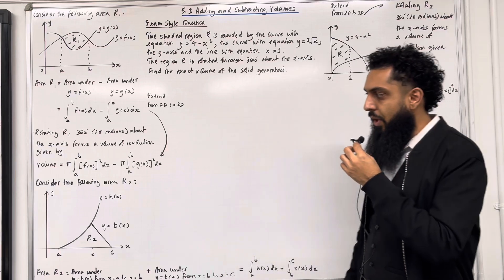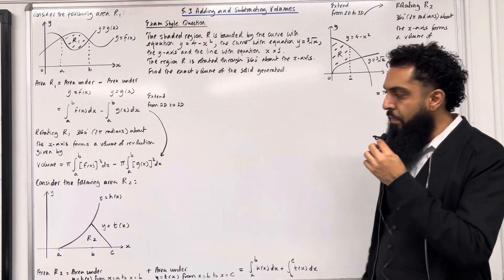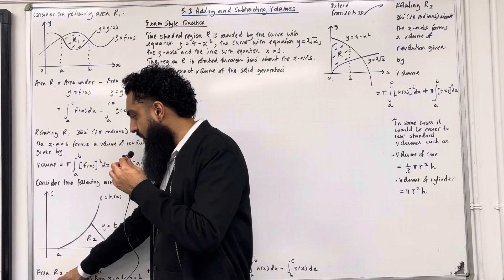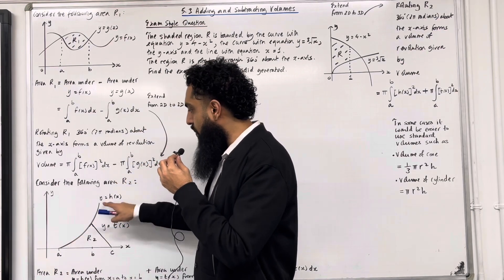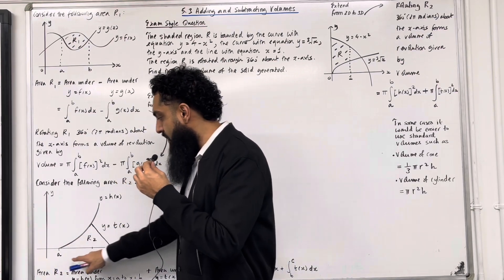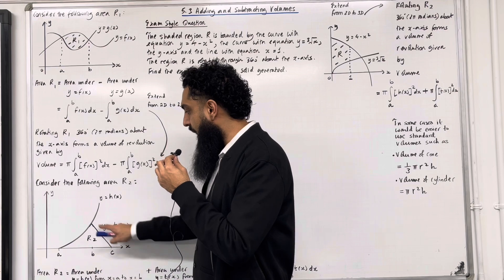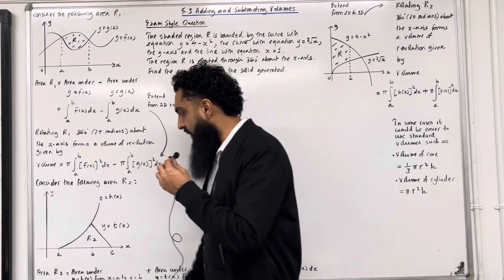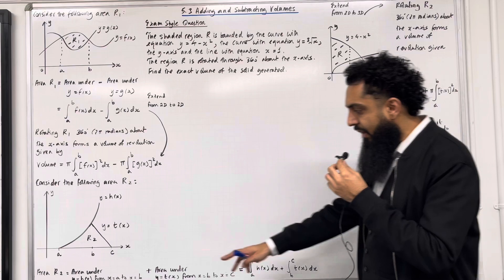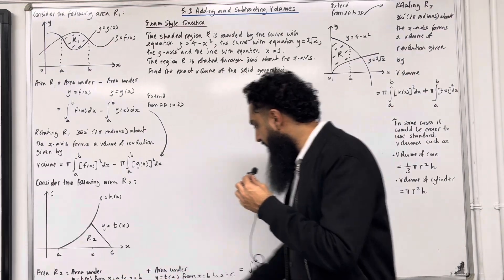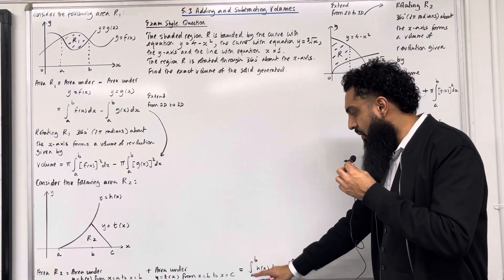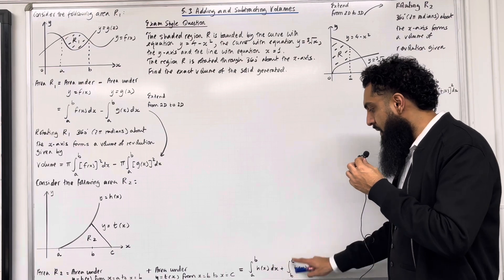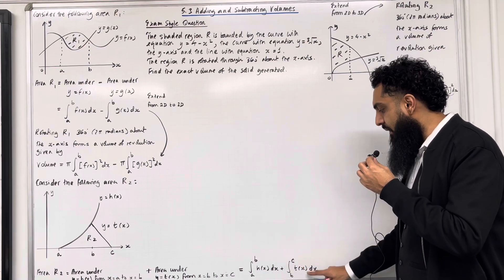Looking at the second scenario. Consider the following area R2. The area R2 is given by the area under the curve y = h(x) from a to b, plus the area under the line y = t(x) from b to c. We can formalise this as the integral from a to b of h(x) dx plus the integral from b to c of t(x) dx.